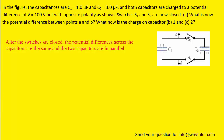It might help to try to visualize what the circuit looks like once the two switches are closed. We can just draw lines to close the switches, and once we do that, we complete the circuit and we can see that capacitor one and capacitor two are in fact in parallel with one another, which means the potential differences across those capacitors will be the same.